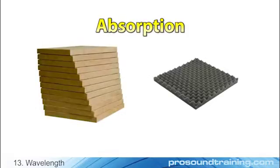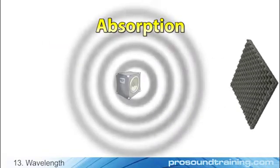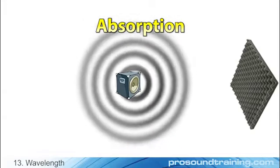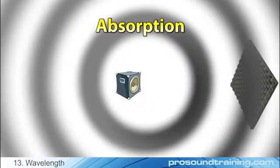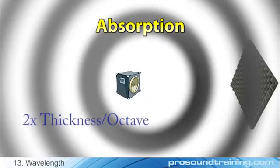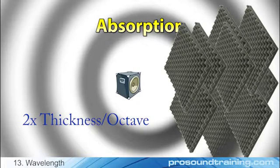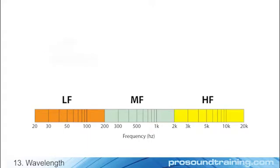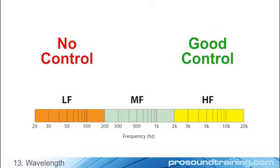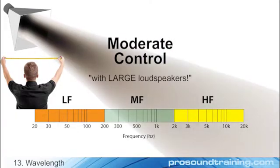Sound absorption is wavelength-dependent. 2-inch acoustic panels are good sound absorbers at 8 kHz, a short wavelength. But these same panels are acoustically transparent at 125 Hz, a long wavelength. Since 125 Hz is 6 octaves lower than 8 kHz, the panels would have to be 12 times thicker to have the same effect. This means that low frequencies, or long wavelengths, do pretty much what they please. High frequencies can be concentrated or absorbed quite readily. Mid frequencies represent the transition region between control and no control.